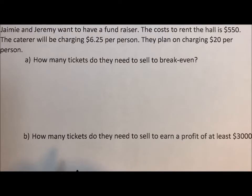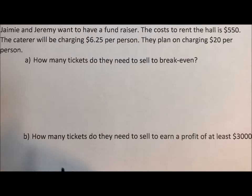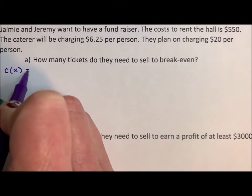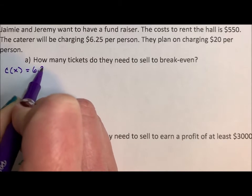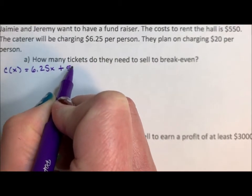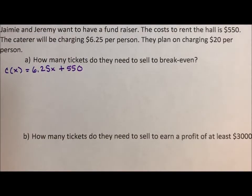To break even, that means the cost of the fundraiser and the revenue have to match up. Their costs are $6.25 per person and $550 to rent the hall. This is all the money that Jamie and Jeremy are spending on this fundraiser.